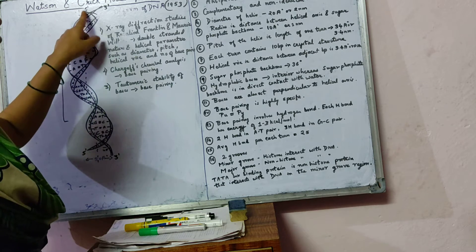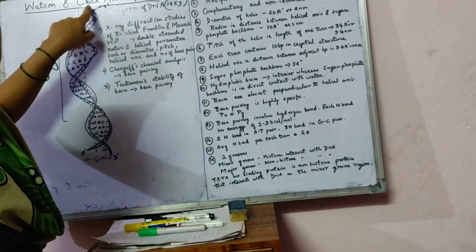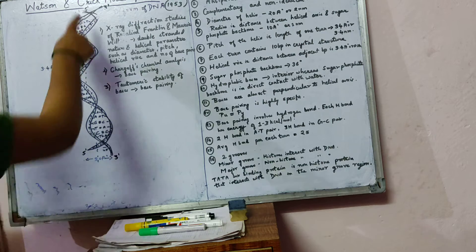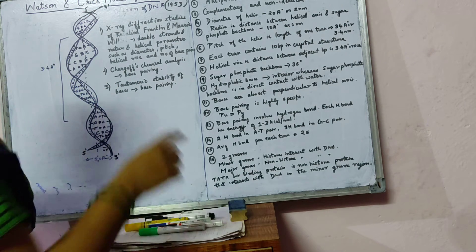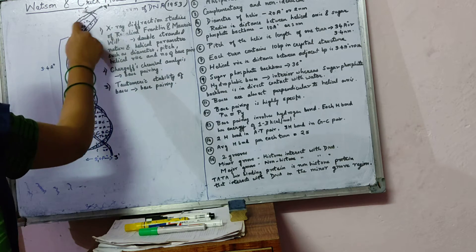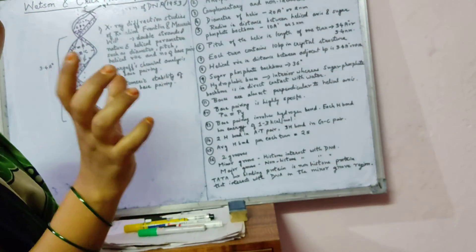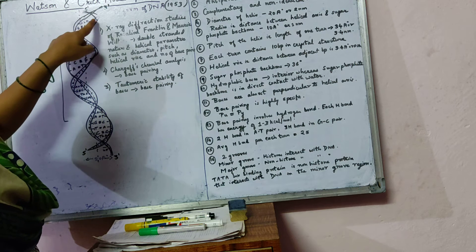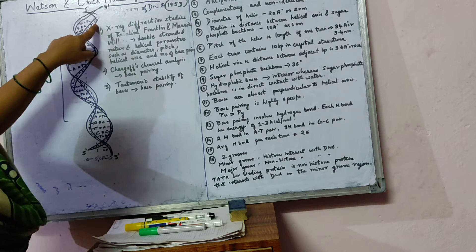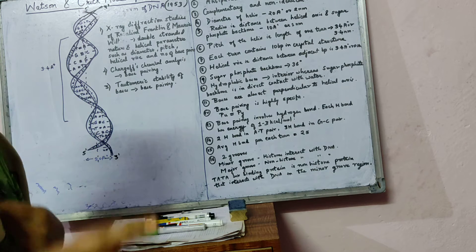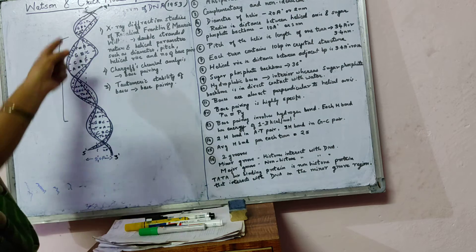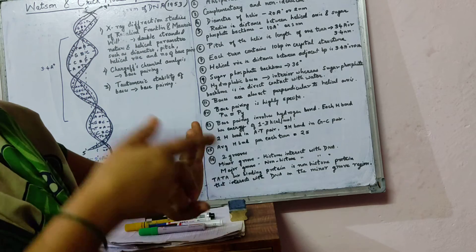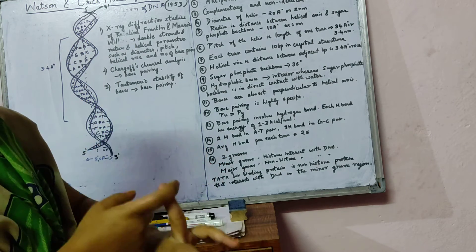The two strands are antiparallel because the 5' phosphate of one strand is close to the 3' hydroxyl group of the other strand — therefore it is called antiparallel. The two strands are also complementary and non-identical, meaning both strands are complementary to one another: if there is adenine in one strand, there is thymine in the other.